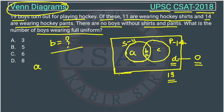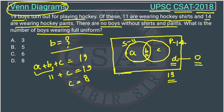A plus B plus C equals 19, and A plus B equals 11. So 11 plus C equals 19, which means C equals 8. Since B plus C equals 14 and C is 8, B equals 6. And since A plus B equals 11 and B is 6, A equals 5. So the answer is option C, which is 6.